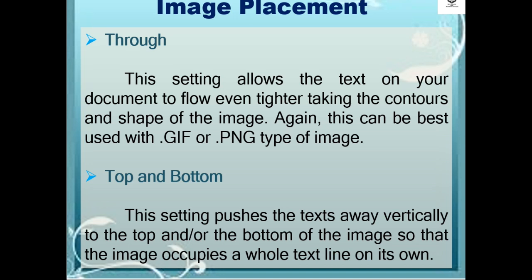Another is through. This setting allows the text on your document to follow even tighter, taking the contours and shape of the image. Again, this can be best used with a .gif or .png type of image. Next is top and bottom. This setting pushes the text away vertically to the top and/or the bottom of the image, so that the image occupies a full text line on its own.